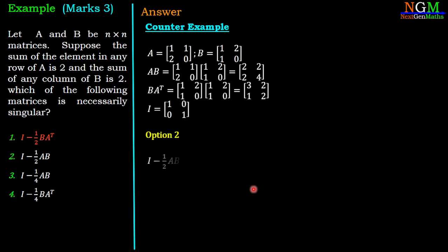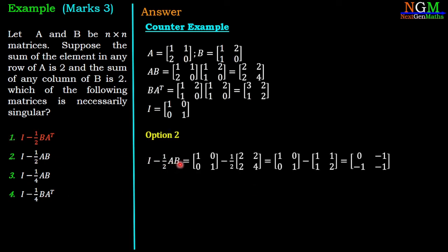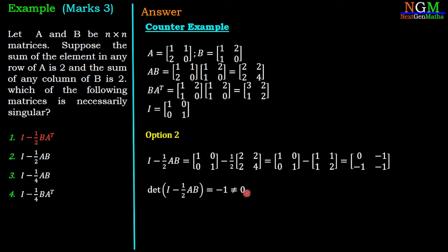Option 2: I minus 1/2 times AB. So [1 0; 0 1] minus 1/2 times [2 2; 2 4] gives [0, -1; -1, -1]. The determinant value is -1, which is non-zero. Therefore I minus 1/2 times AB is a non-singular matrix, so option 2 is not the correct option.